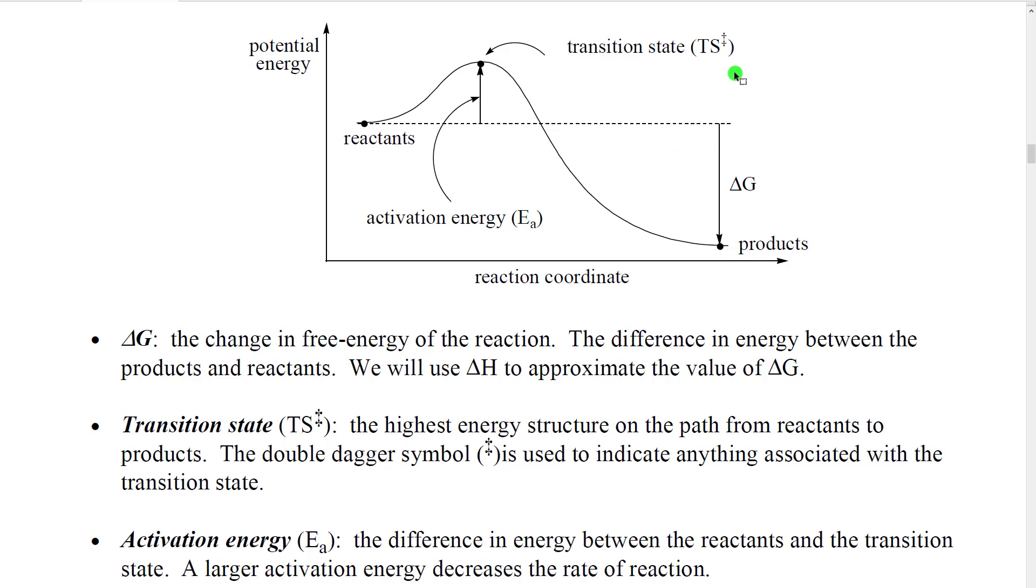The double dagger actually is generally used to indicate anything associated with the transition state. So TS double dagger usually represents the actual structure, but you can have a delta G double dagger. That would be the Gibbs free energy of that transition state. You can have a delta H double dagger, a delta S double dagger. You can have all sorts of double daggers. For our purposes, just understanding that it represents a structure is usually going to be enough.